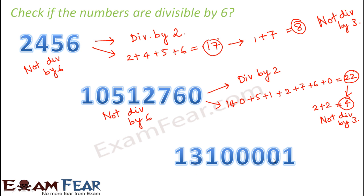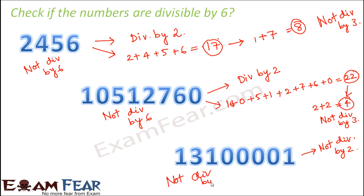The next number is 1310001. The units digit is 1, so it is not divisible by 2. Since it is not divisible by 2, there is no point checking divisibility by 3 — we already know this number is not divisible by 6.